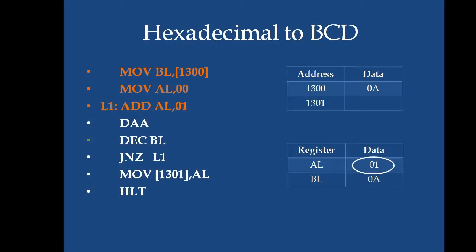Now, AL is added with 1, incremented by 1. The DAA operation is performed. Since it is less than 9, no operation is done. Then BL, the hexadecimal value is decremented by 1 from 0A to 09.